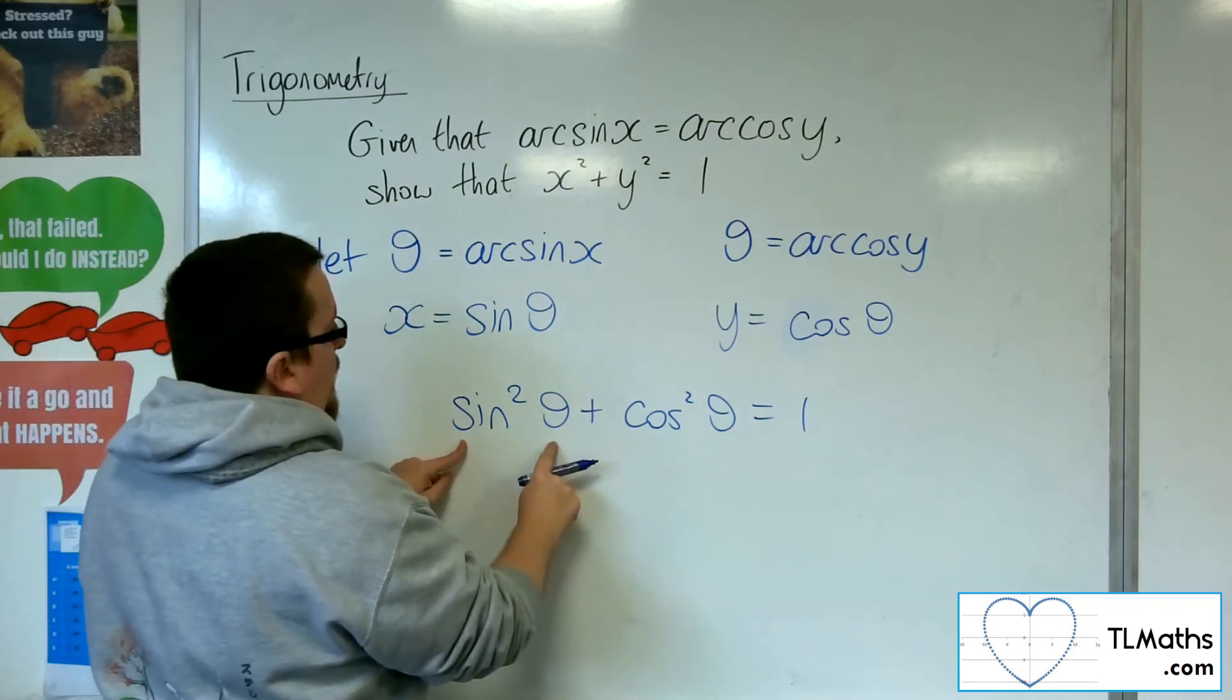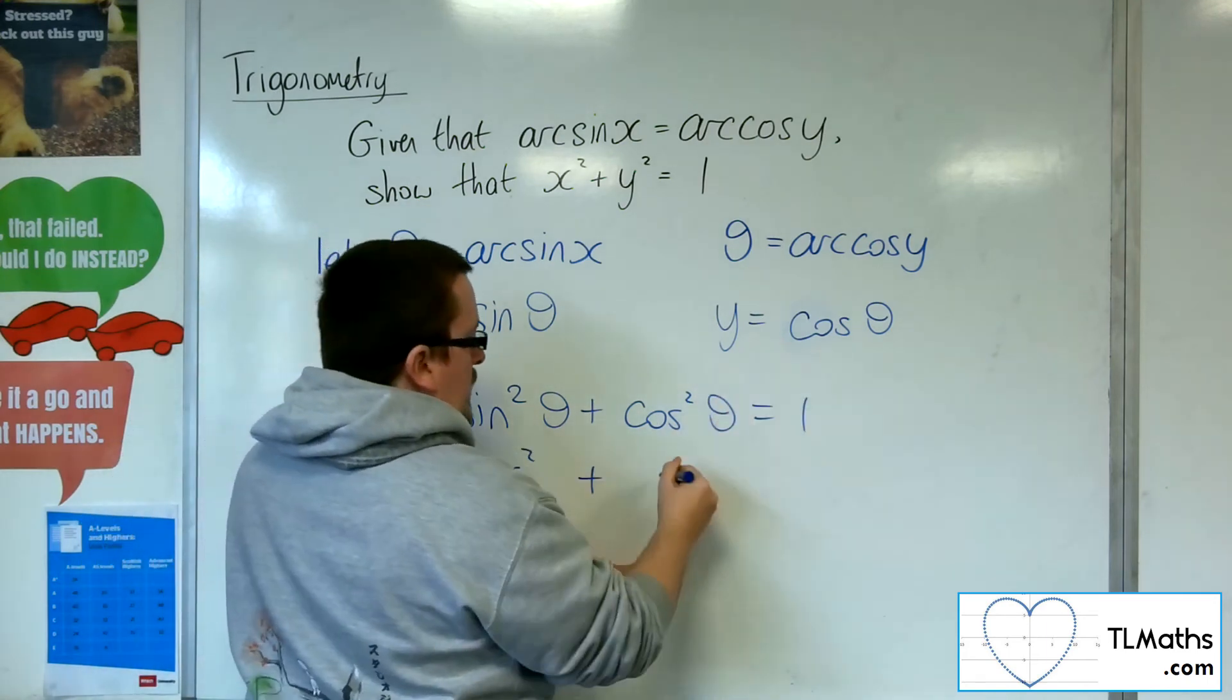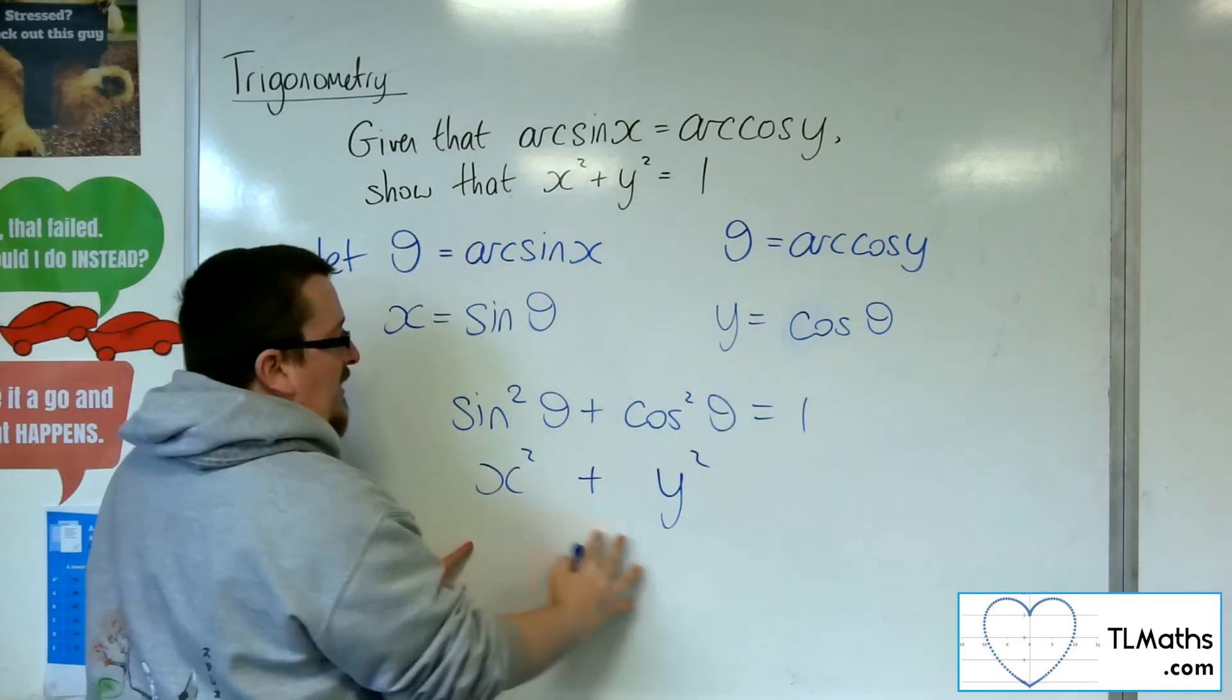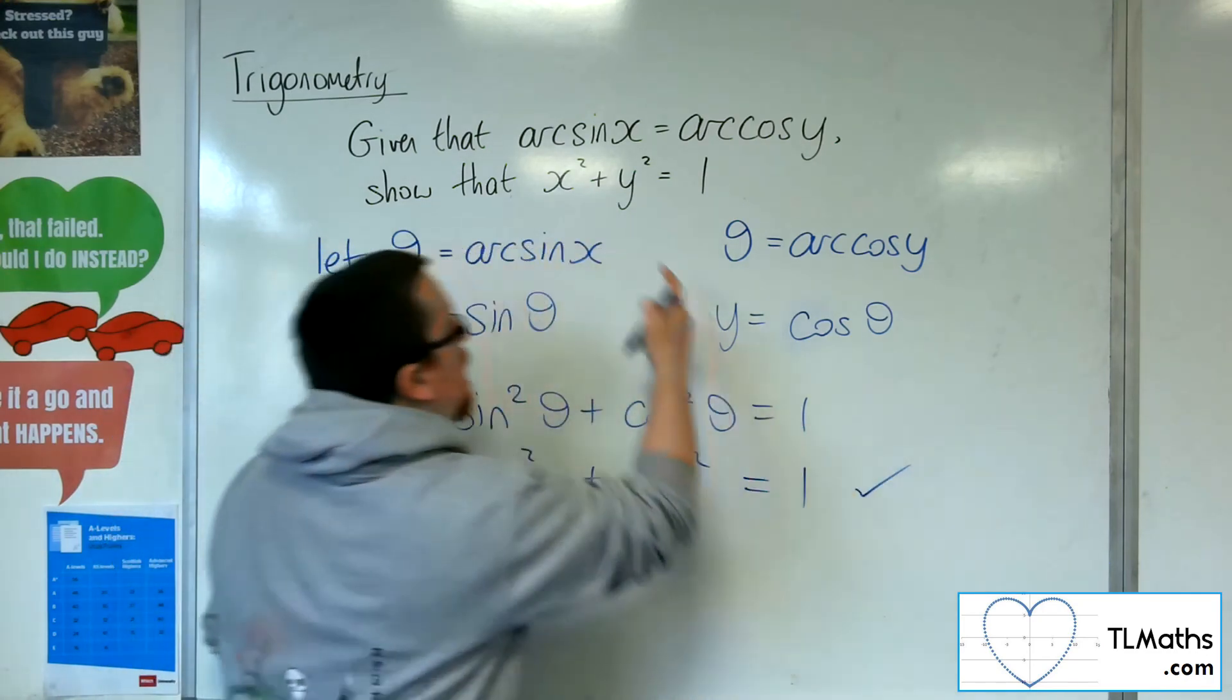So if sin θ is x, then we have x². Cosine θ is y, so we've got y². Therefore x² + y² = 1, as required in the question.